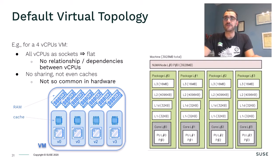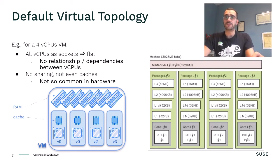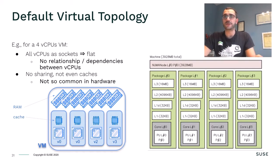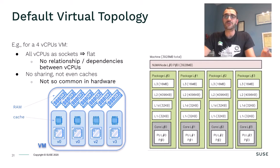This is the QEMU and libvirt default virtual topology for your VMs if you don't define one yourself — it is a flat one with no dependencies and no sharing of computational resources or caches. Something has to be used as default, and it is a good idea to make it flat since we do not know in advance the characteristics of the hardware where one would want to run the VM. One thing to note is that a configuration where all CPUs are full sockets is not really common in hardware.